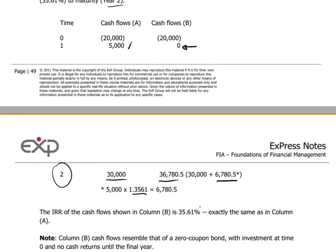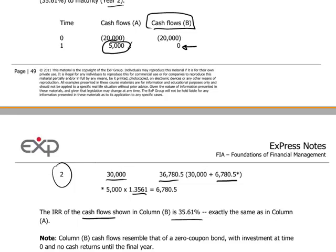If we calculate the IRR of the cash flows shown under column B, it would be exactly 35.61%, the same as in column A. In other words, both cash flow profiles for A and B yield 35.61%. This proves the point that the interim payment of 5,000 is effectively calculated as being reinvested to maturity.